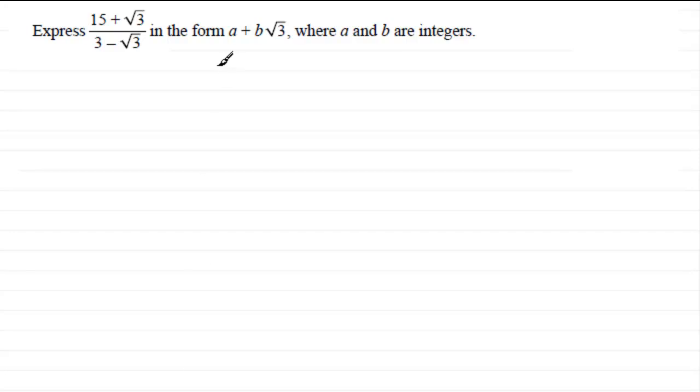Okay, welcome back if you had a go. So to do this, what we'll do is just copy down the question first of all: (15 + √3) / (3 - √3). What this is going to be equal to is obviously the same thing, but what we've got to do is rationalize it. To rationalize this, we need to multiply this effectively by 1 so it doesn't change the value.